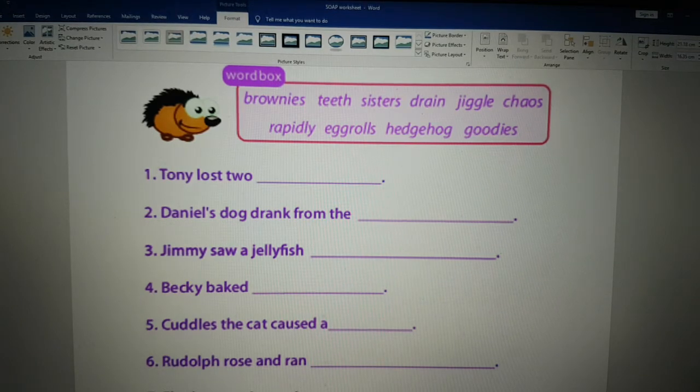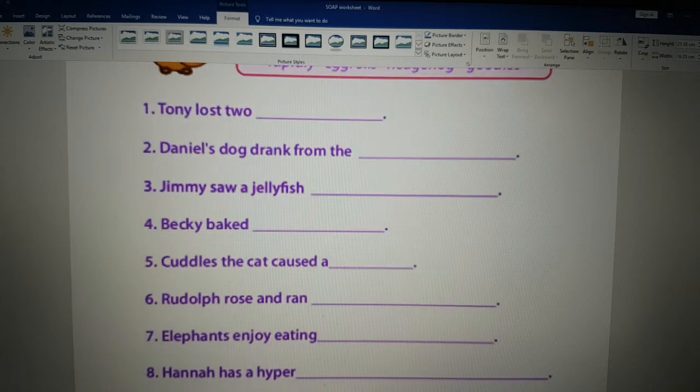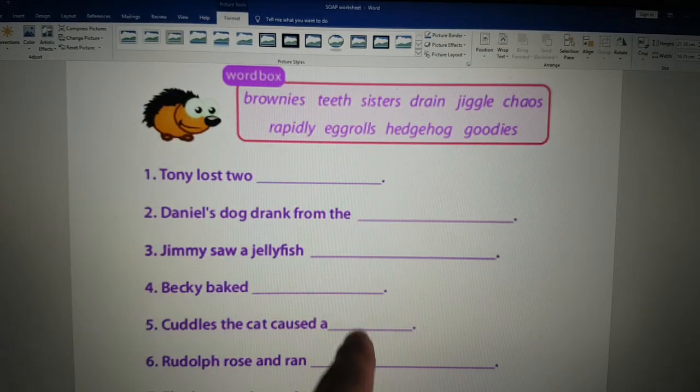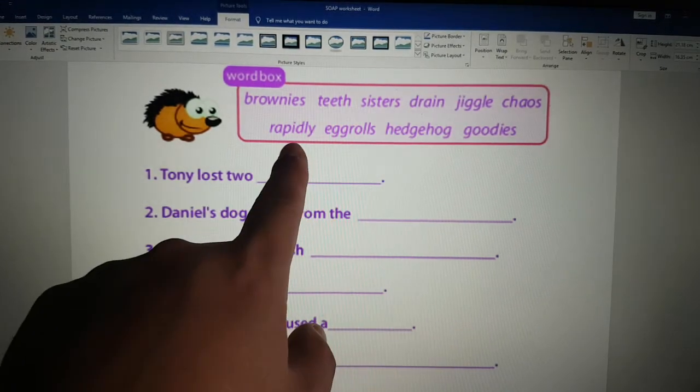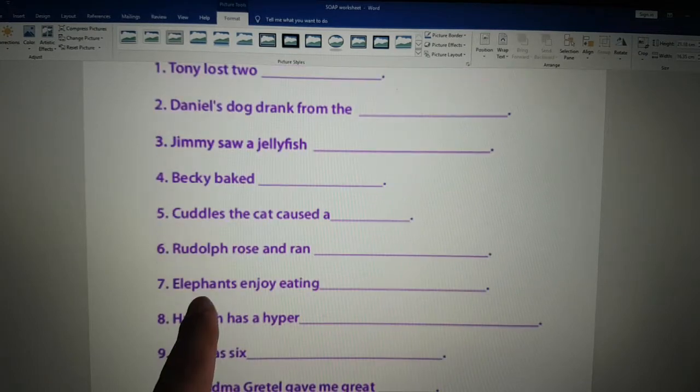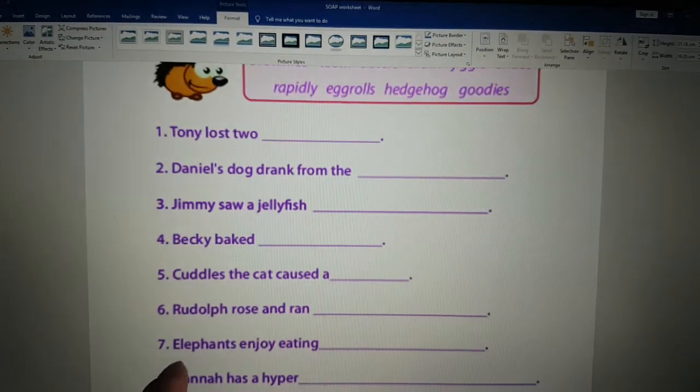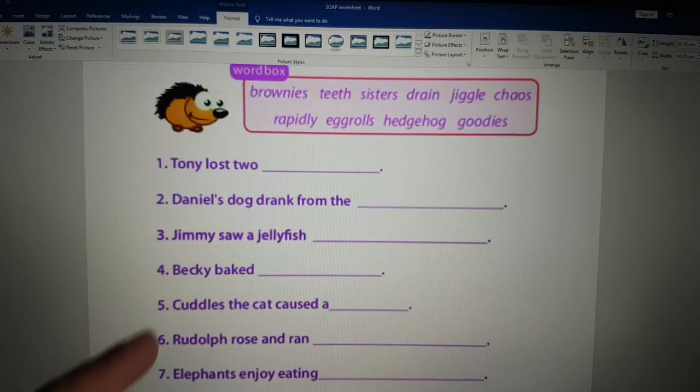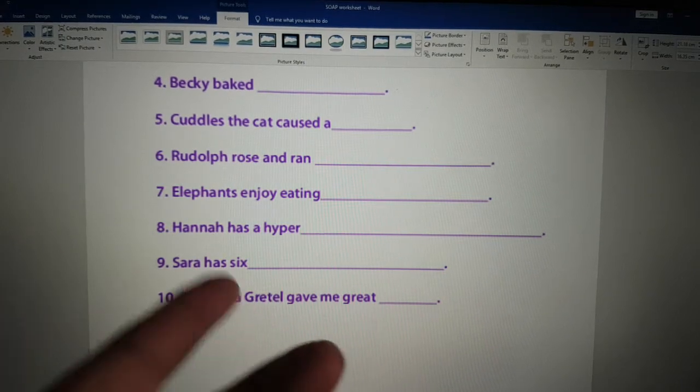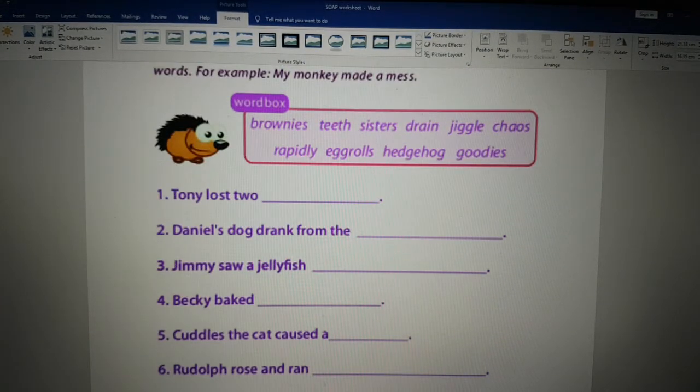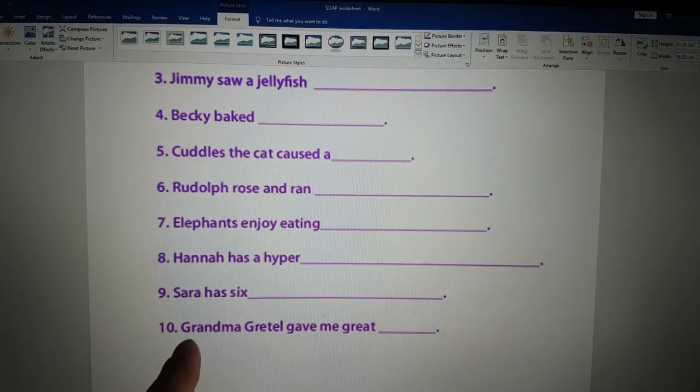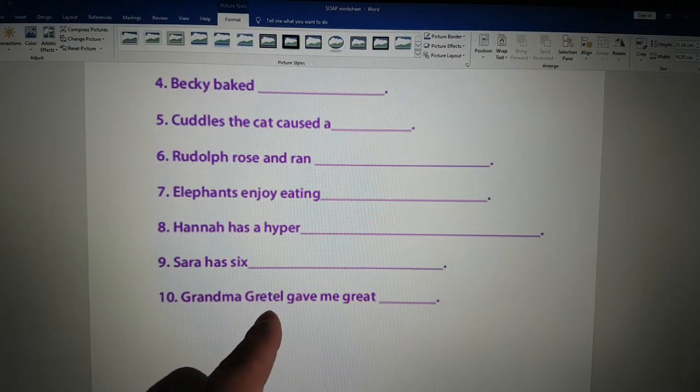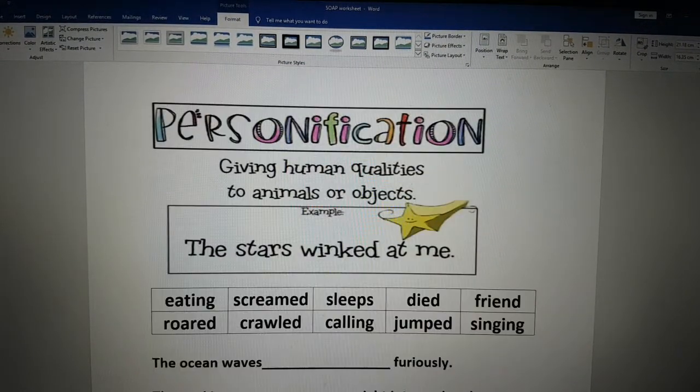Rudolf rose and ran rapidly. Very quickly, rapidly. Elephants enjoy eating egg rolls. Hannah has a hyper hedgehog. Hyper means lots of energy, so her hedgehog has lots of energy. Sarah has six sisters. Grandma Gretel gave me great goodies. Goodies are presents. So Grandma Gretel, that's her name, gave me great presents.